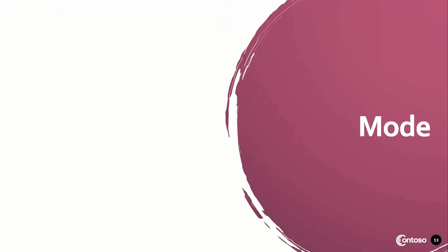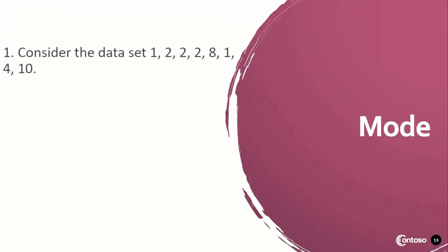And lastly, we have the mode. We're going to identify the mode and the type of mode. Consider the data set 1, 2, 2, 2, 8, 1, 4, and 10. The number 2 is the most frequently occurring number, and since there is only one mode, it is considered unimodal.